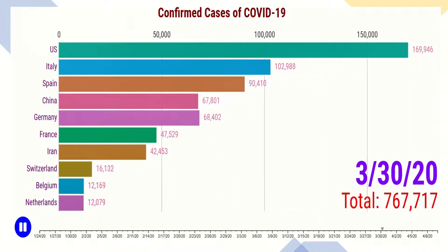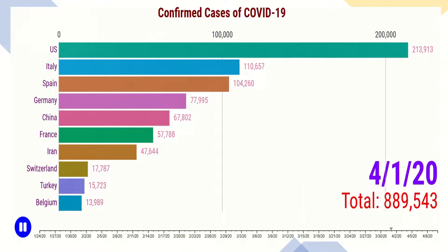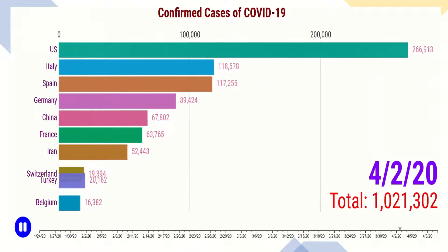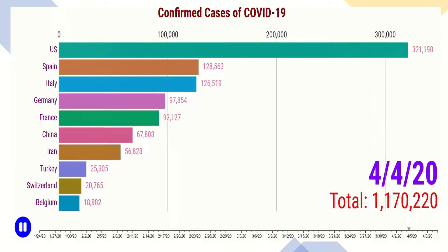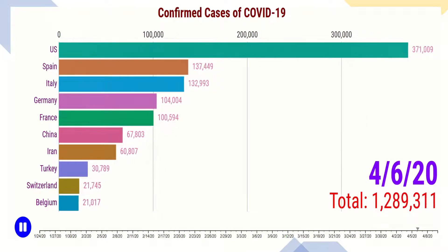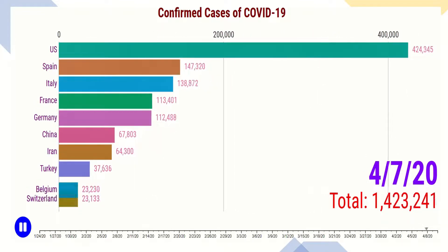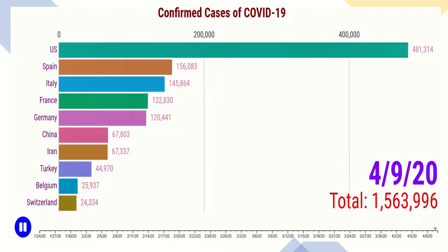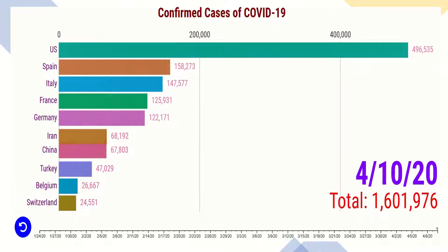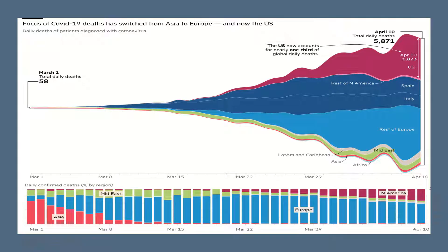Now the top three countries with the most cases are the US, Spain, and Italy. The coronavirus spread from China to other countries and from Asia to Europe and the US.